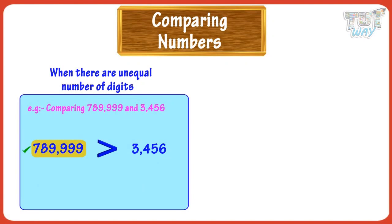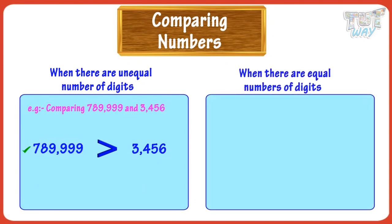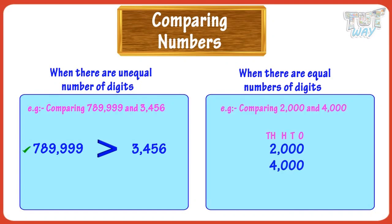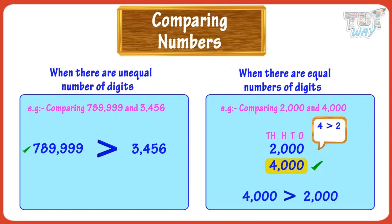The second case is when the number of digits in two numbers is the same. Let's learn how we compare numbers in that case. First, we compare the numerals at the biggest place in the numbers, so we will compare the thousands place here. Four is bigger than two, so the number with the bigger numeral at the biggest place is bigger — four thousand is bigger than two thousand.